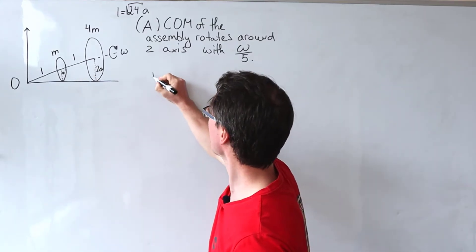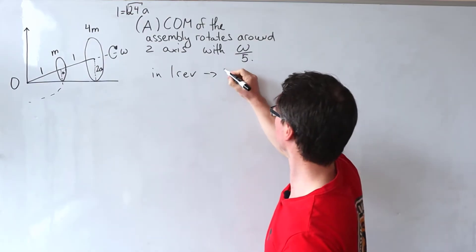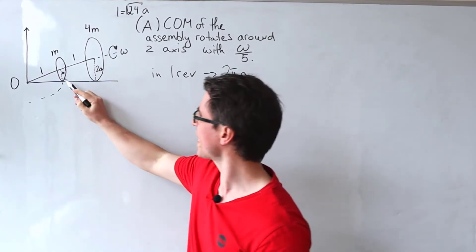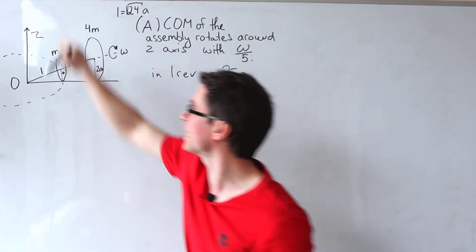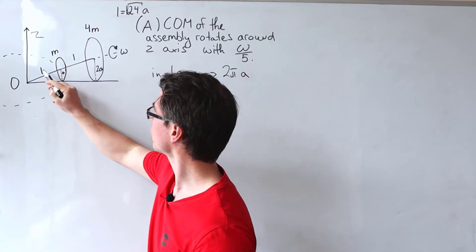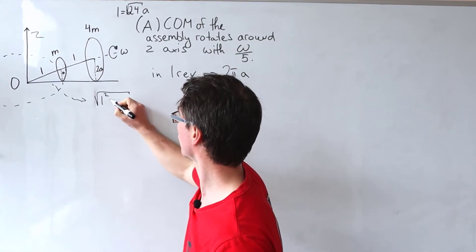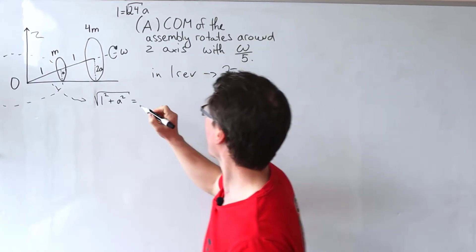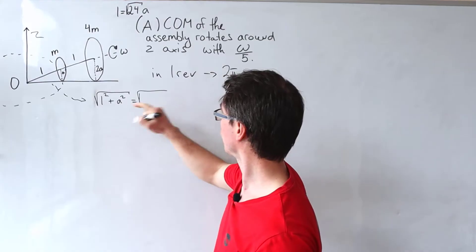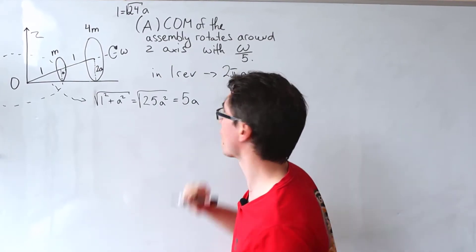For one revolution, the disk linearly covers a distance equal to its circumference. For the smaller disk, that's 2πa. How many revolutions does it take to go all around the z-axis? We look at this distance: we know it's l and a, so by Pythagoras this is √(l² + a²). Since l = √24·a, this gives √(25a²) = 5a.